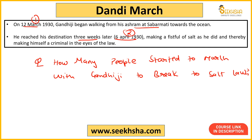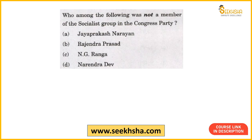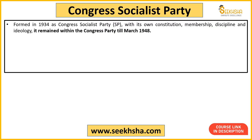Next question: Who among the following was NOT a member of the Socialist Group in the Congress Party? Options are JP Narayan, Rajendra Prasad, N.G. Ranga, and Narendra Dev. This is directly from NCERT. The right answer is B — Rajendra Prasad. Rajendra Prasad was not part of the Congress Socialist Party.